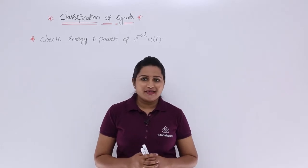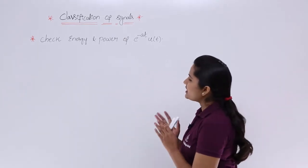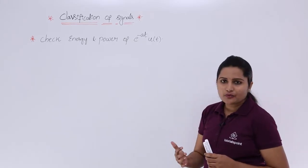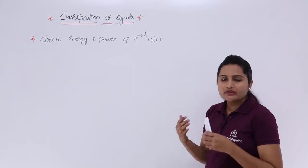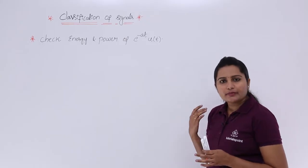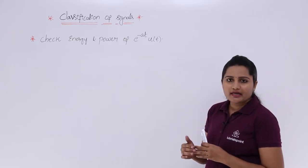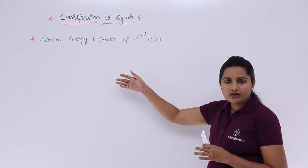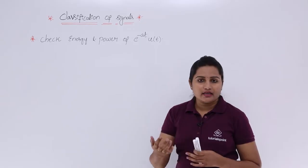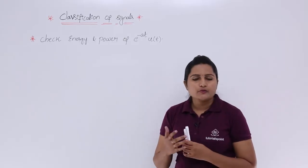In this video we are going to calculate energy and power of an exponential signal. The problem is to check the energy and power of e^(-aT)u(T). This covers all negative exponential signals multiplied with u(T) — such as e^(-10T)u(T), e^(-20T)u(T), e^(-30T)u(T). For each negative power exponential multiplied with unit step, you can apply this formula as a gate shortcut to answer questions related to the energy and power of an exponential signal.